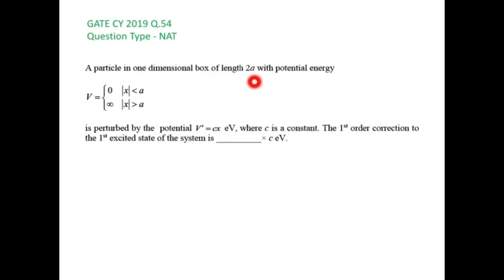And V equals infinite when mod x is greater than a is perturbed by the potential V dash equals cx electron volt where c is a constant. The first order correction to the first excited state of the system is blank c electron volt. To solve this question we should know the first order correction term.